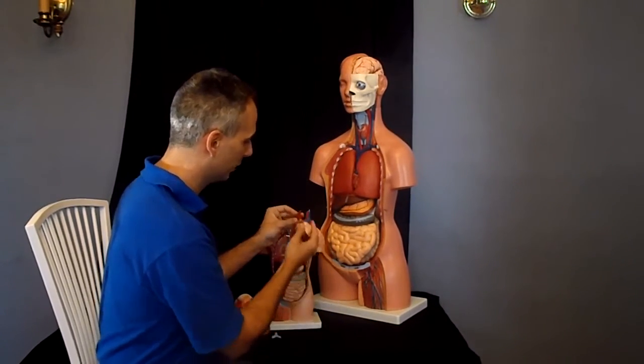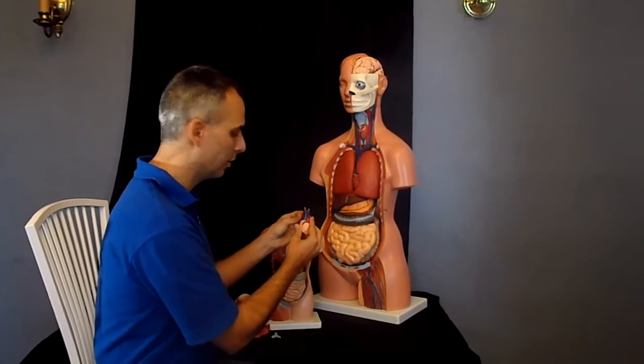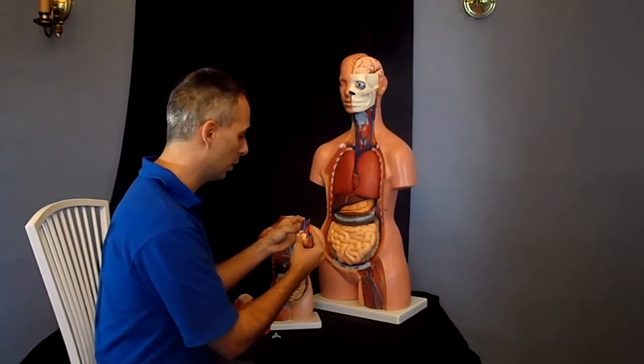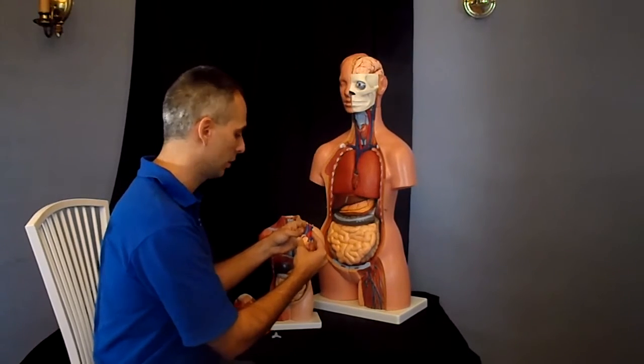The descending aorta connects to the backside of the heart and brings oxygenated blood down to the organs and the other parts of the lower extremities of the body.